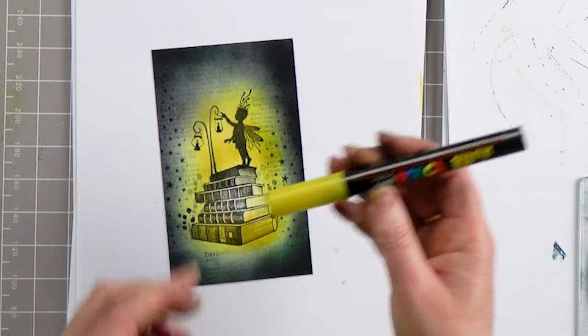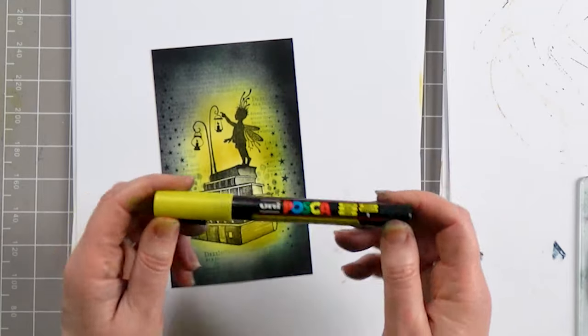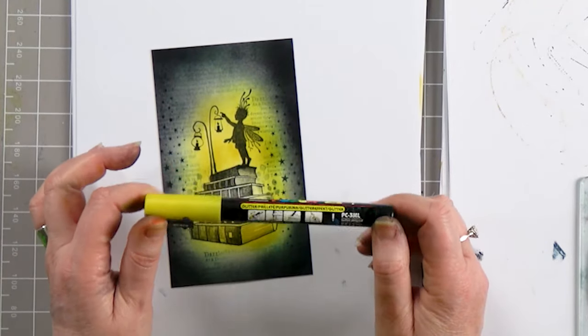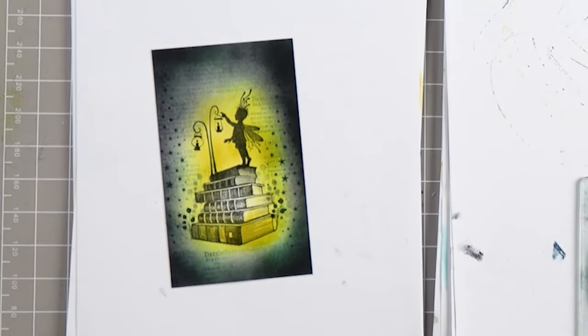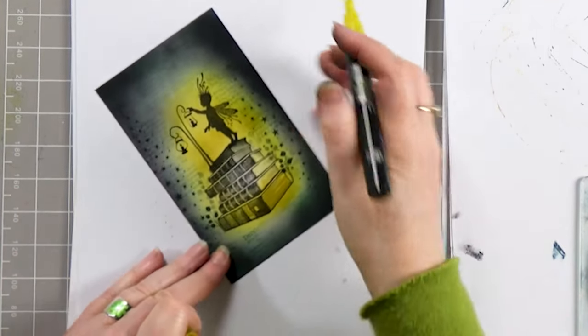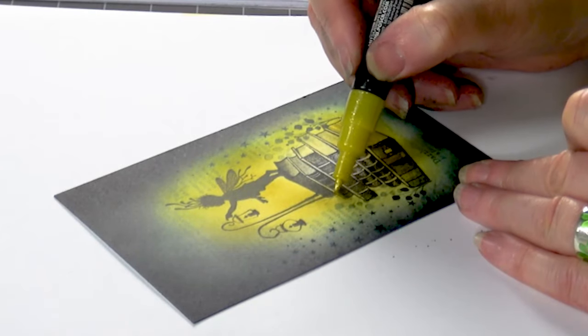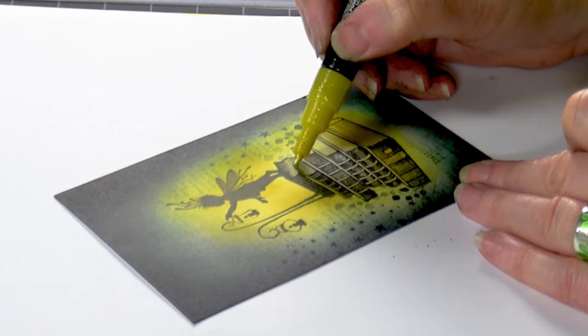I am going to use my Posca pen. This is the yellow but this is the glitter one which is absolutely fabulous for highlighting. So I'm going to go along the edges of the books.